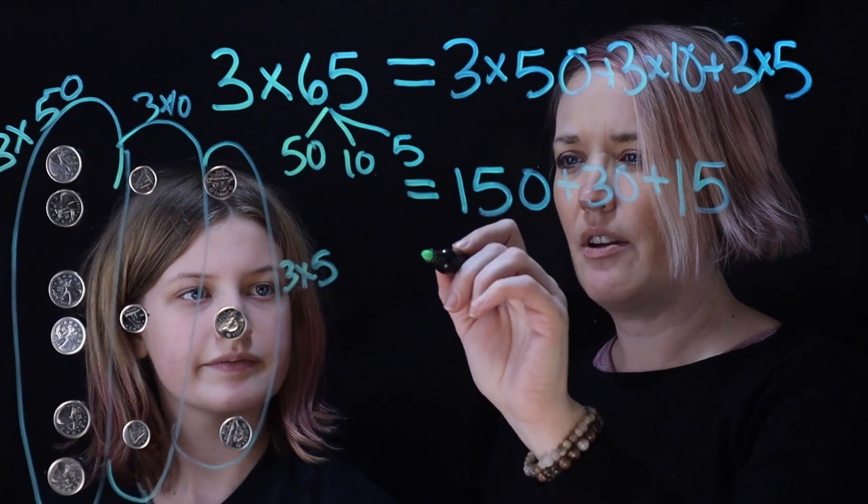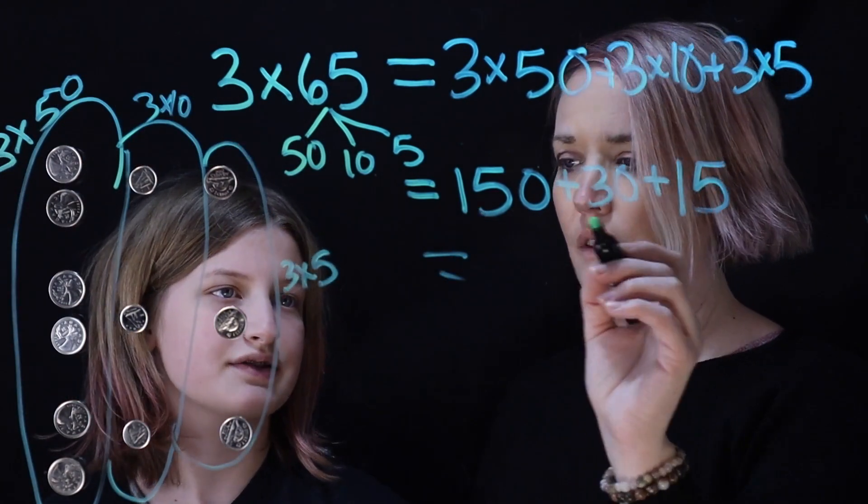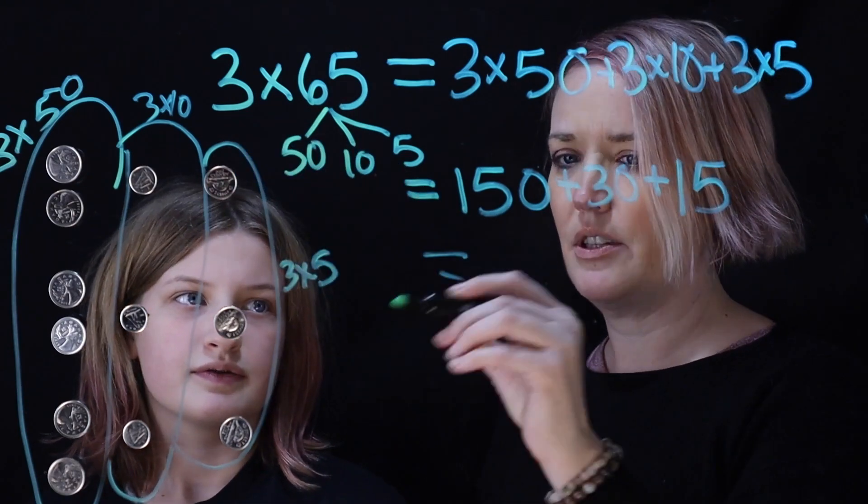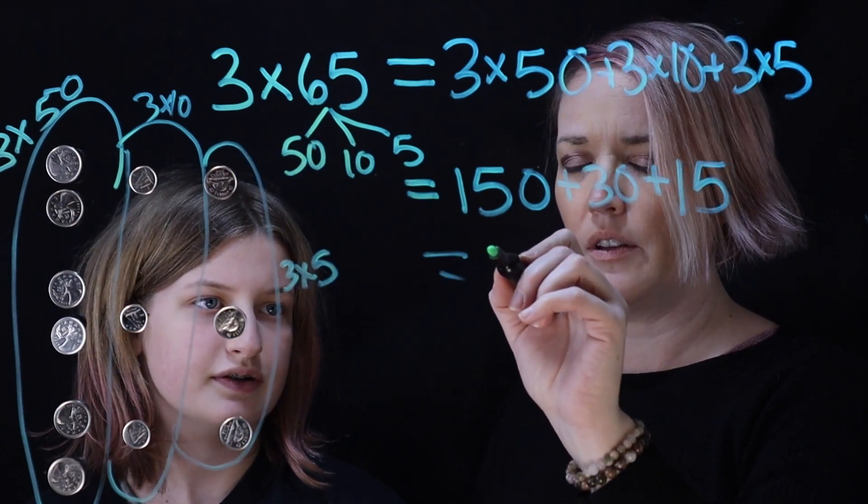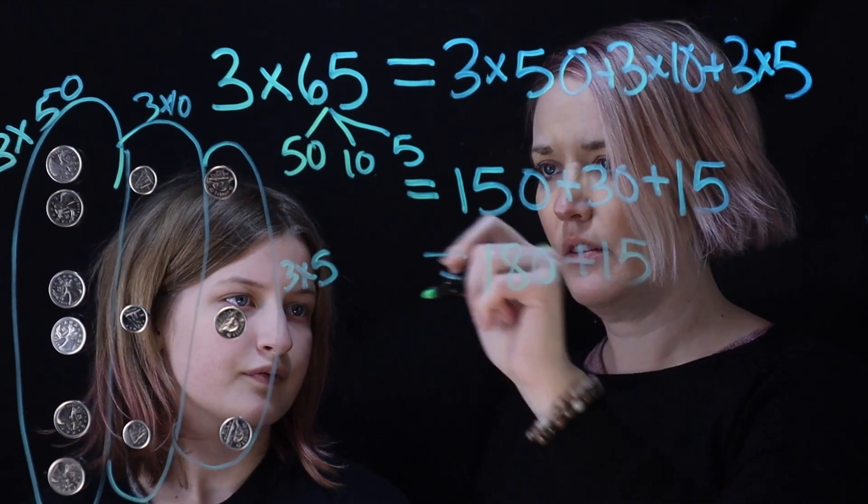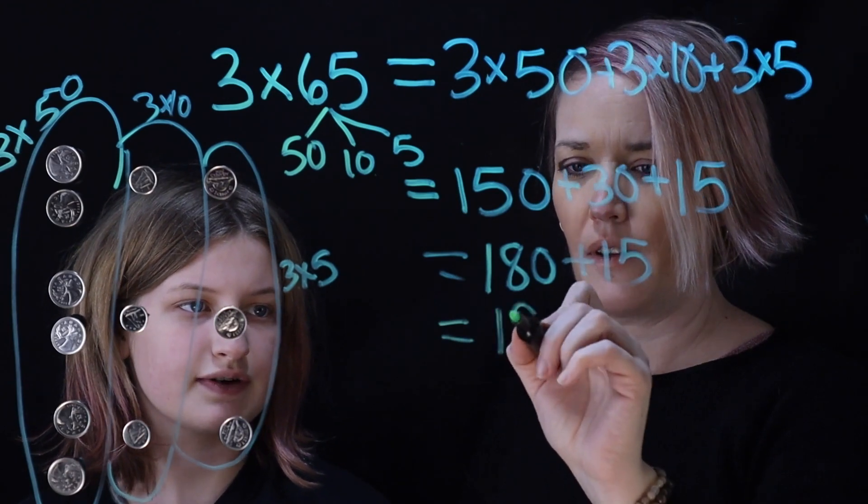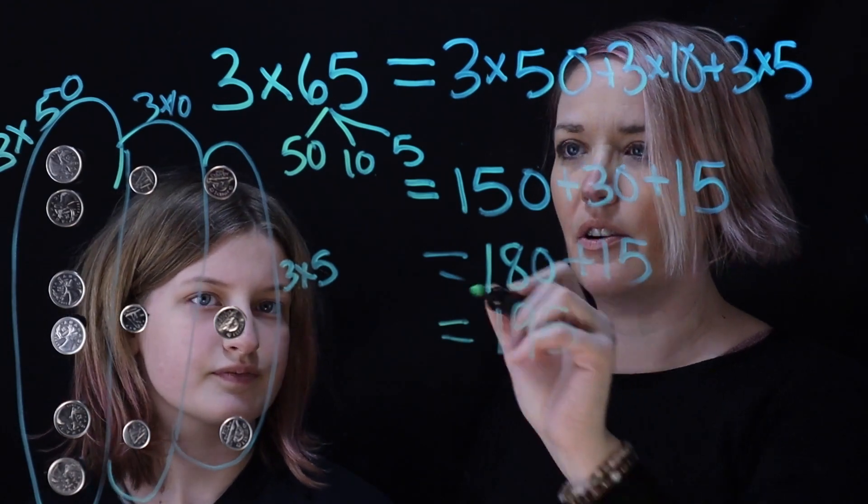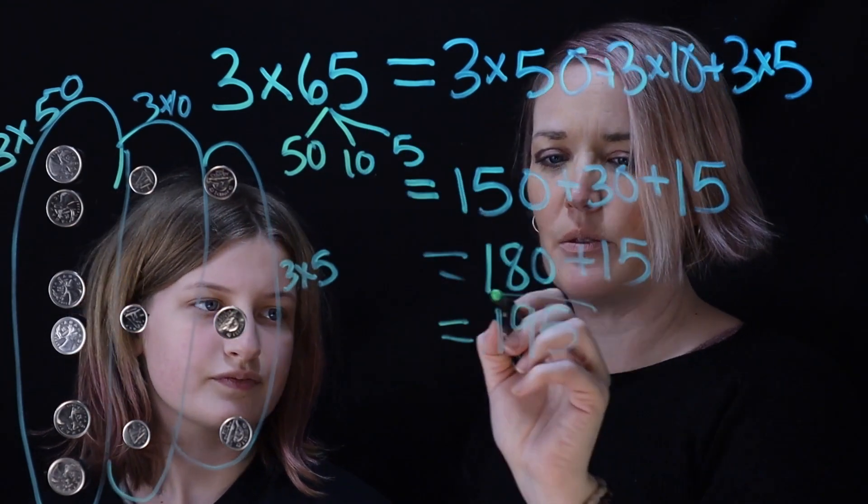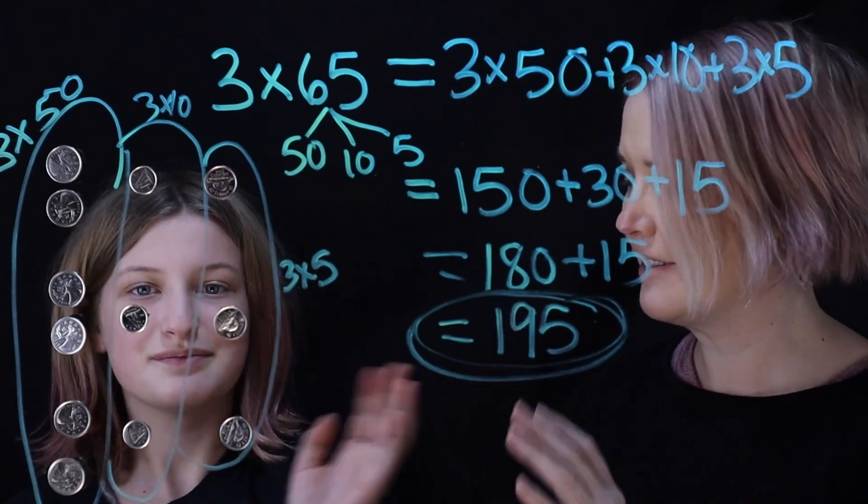Okay so I'll put a circle around here and this is 3 times 5 equals 15 or 15 cents. Okay so now we have to add those together. So $1.50 plus 30 cents is $1.80. And then plus 15 cents, which is $1.95. Okay so 3 times 65 is $1.95. That was awesome. Thanks. Bye everyone.